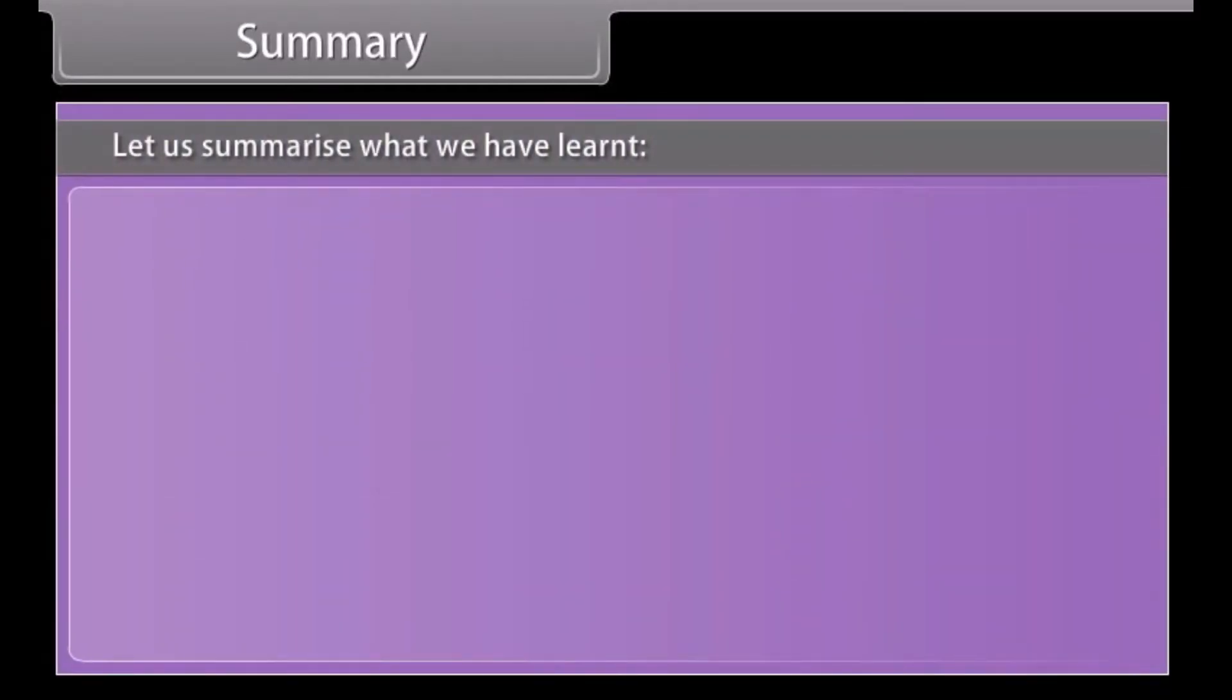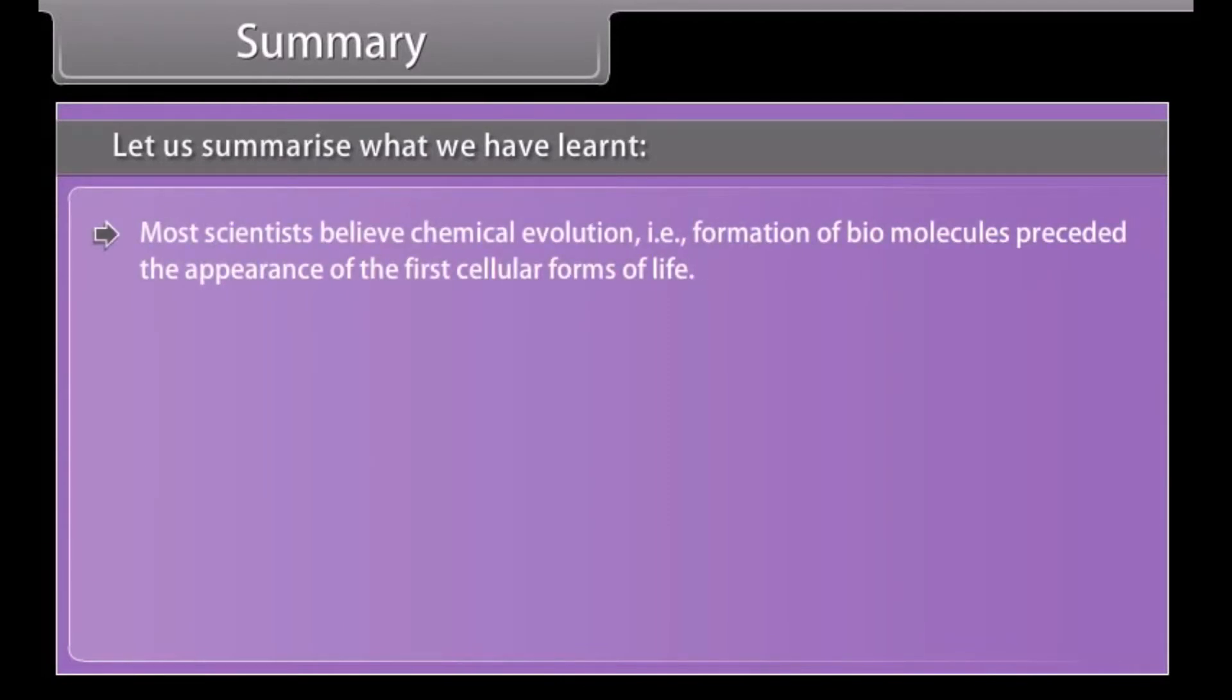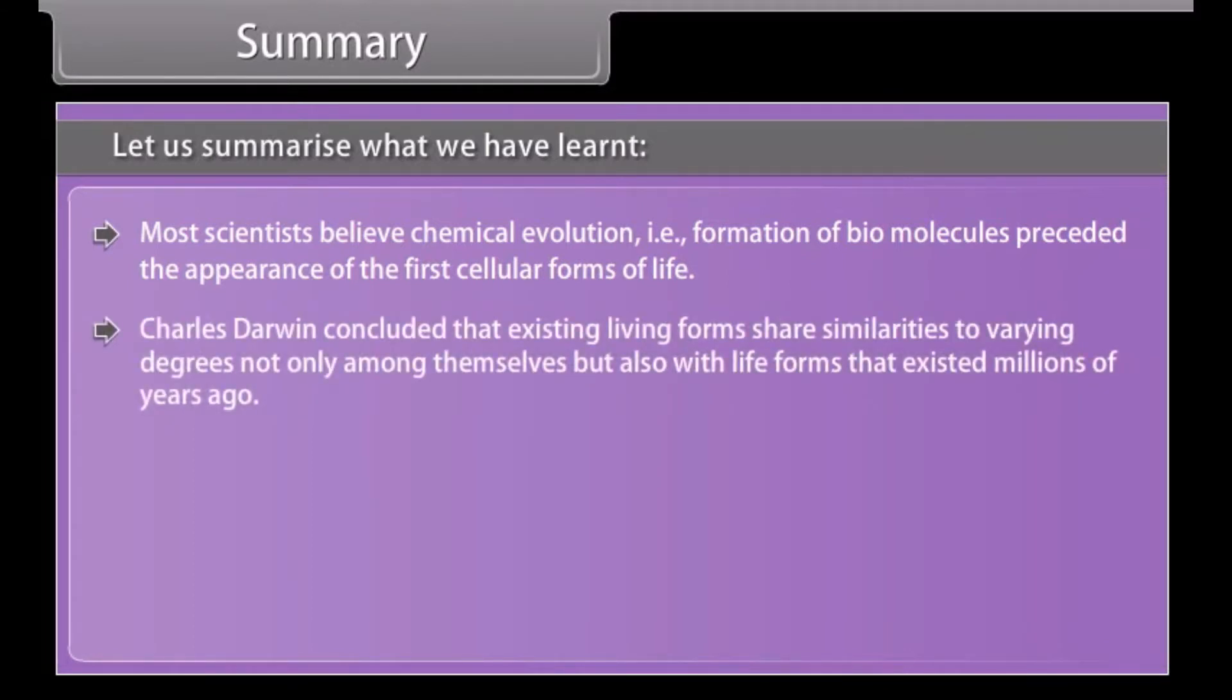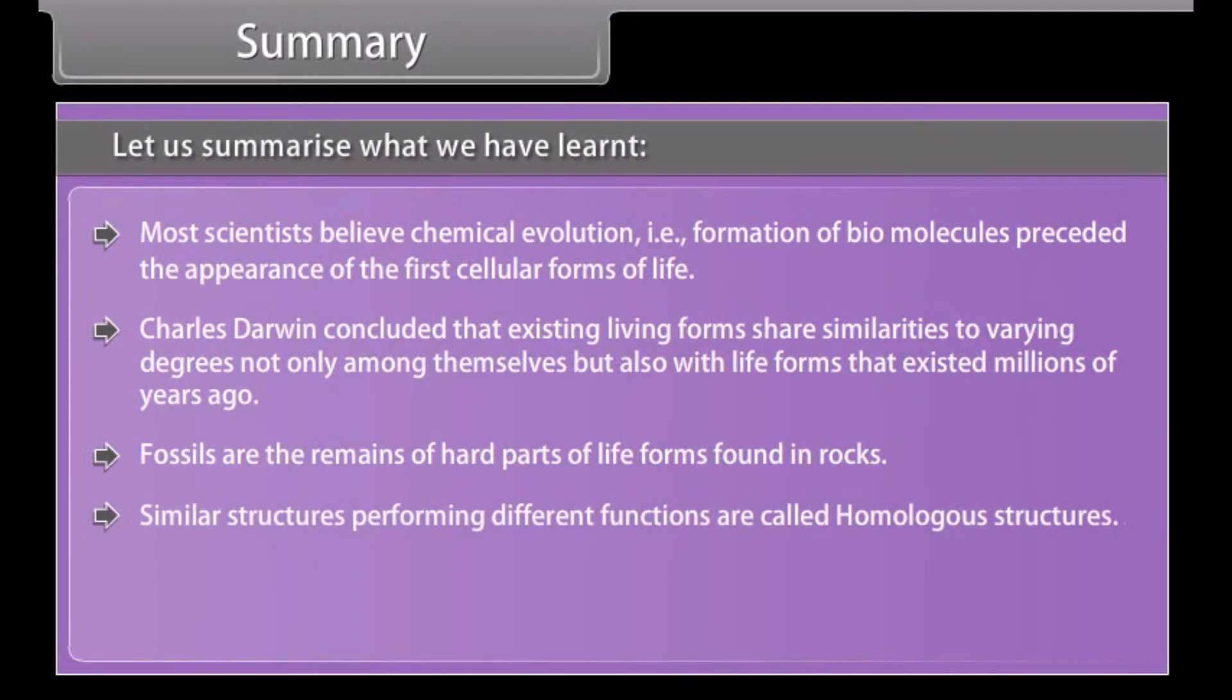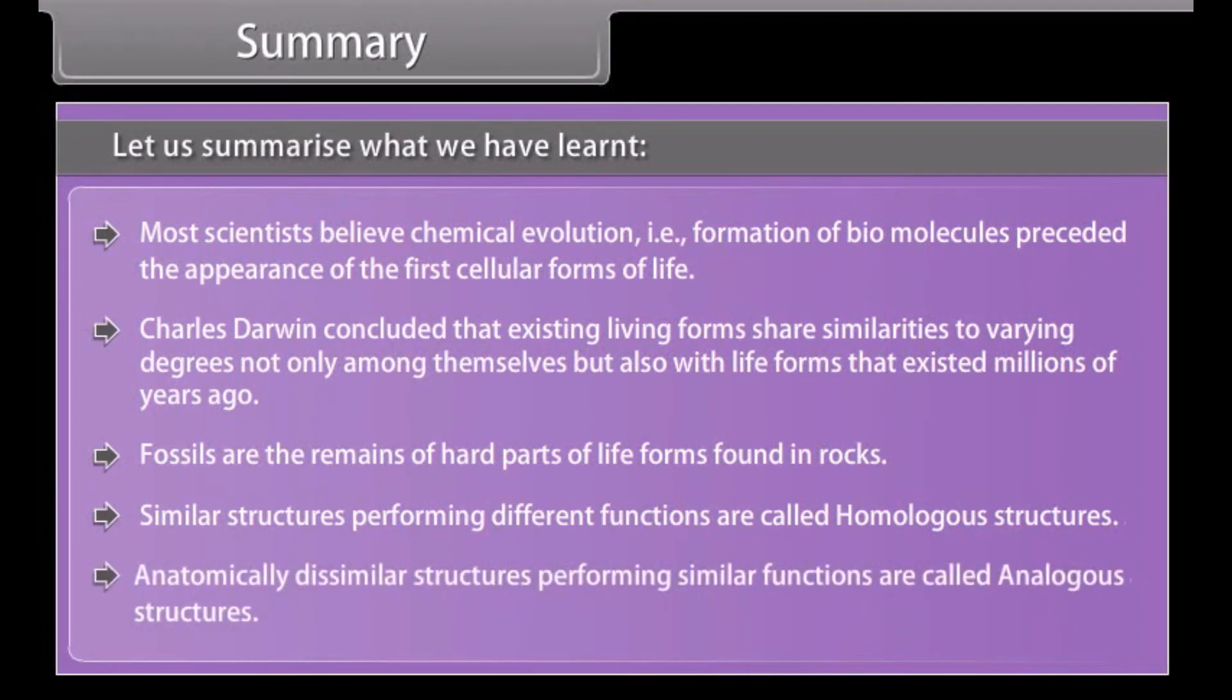Summary. Let us summarize what we have learned. Most scientists believe chemical evolution, that is formation of biomolecules, preceded the appearance of the first cellular forms of life. Charles Darwin concluded that existing living forms share similarities to varying degrees, not only among themselves but also with life forms that existed millions of years ago. Fossils are the remains of hard parts of life forms found in rocks. Similar structures performing different functions are called homologous structures. Anatomically dissimilar structures performing similar functions are called analogous structures.